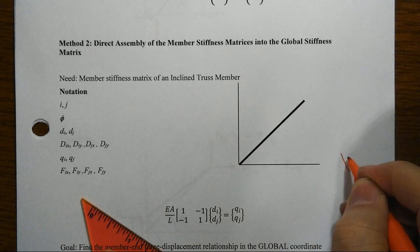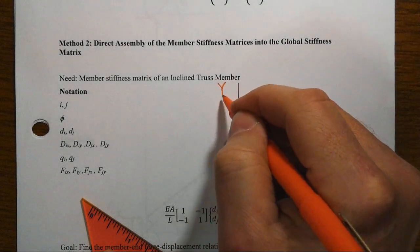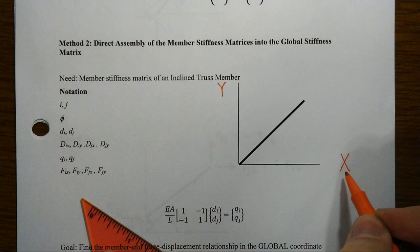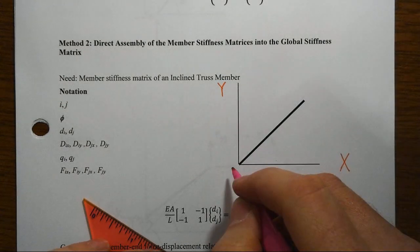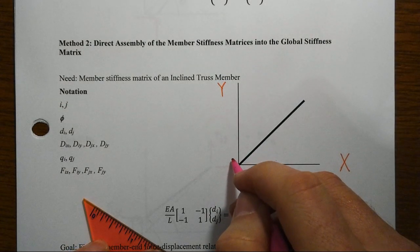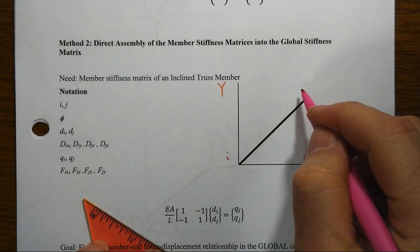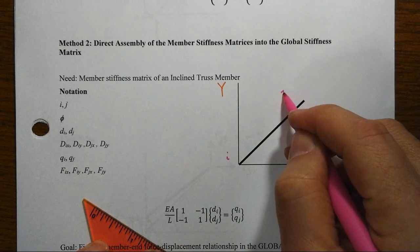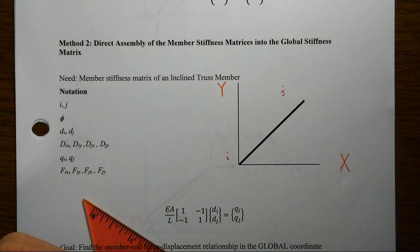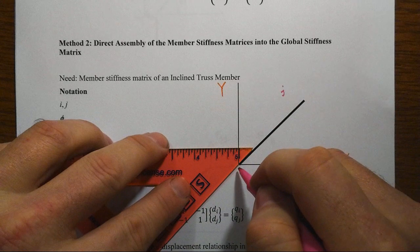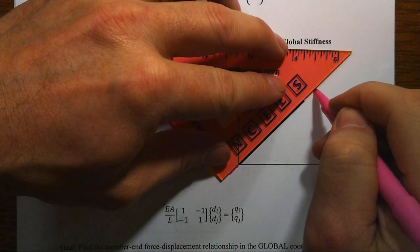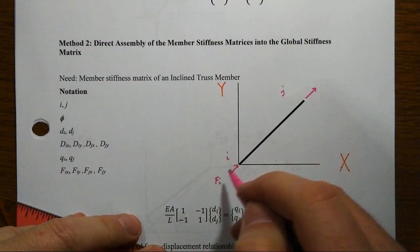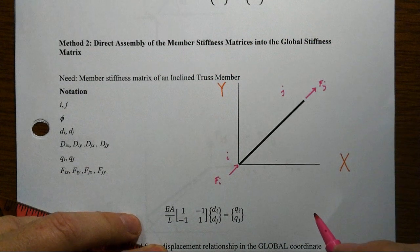Our global coordinate system, capital X, capital Y, is going to be set up in the normal fashion. Our member is inclined here. Now, we're going to call the node that's in the lower left node I, and we'll call the other one node J, not surprisingly. And it will have, in general, in its little local coordinate system, a set of forces, FI and FJ.